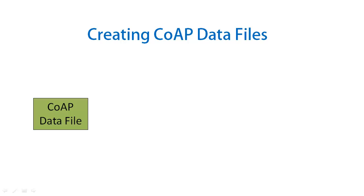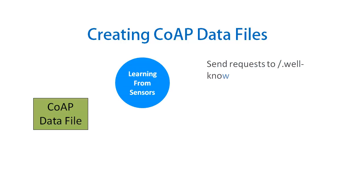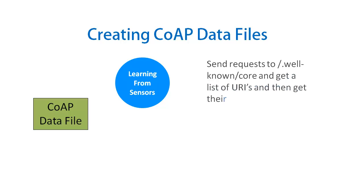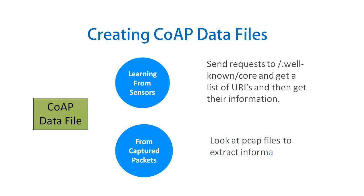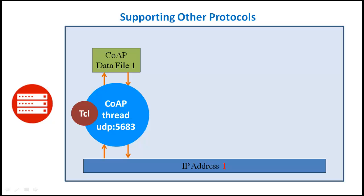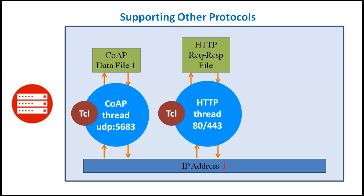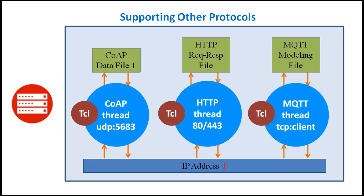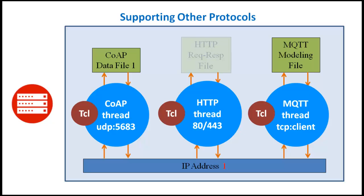CoAP data files can be created by learning from real sensors, by getting a list of supported URIs and their information, or by parsing PCAP files. To support additional IoT protocols for the same device, we simply start additional protocol-specific threads that bind to protocol-specific ports on top of the multi-homed IP address already added. Each protocol supported also has an associated data file, modeling file, or a request-response file.